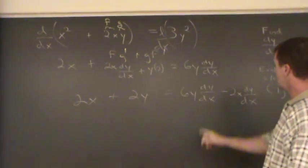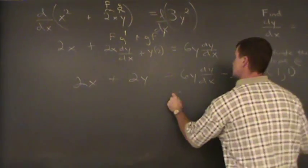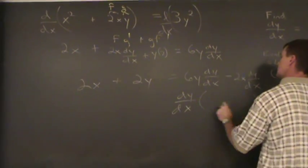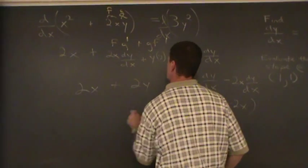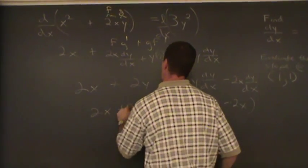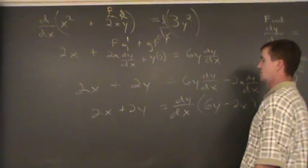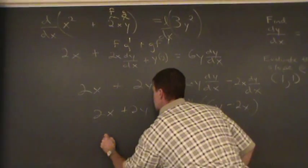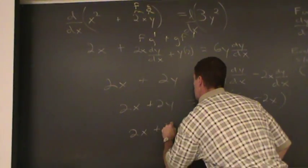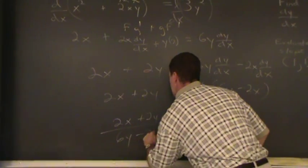And wow, I got two of these. How do I get one dy/dx? I can factor it out. And then, factor out dy/dx. I have 6y minus 2x equals 2x plus 2y. And I'm now gonna divide 6y minus 2x from both sides. And that's solved for dy/dx: 2x plus 2y all over 6y minus 2x.